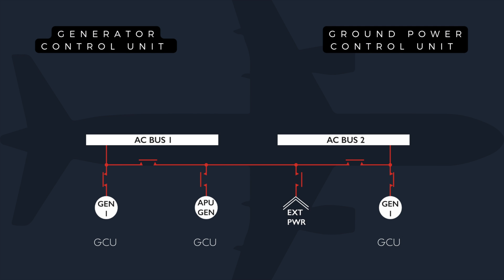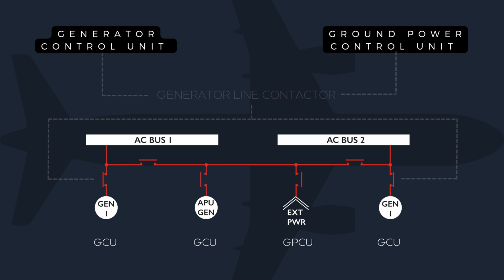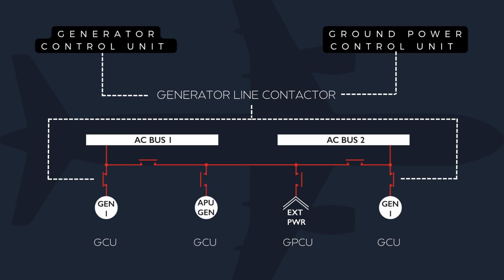The electrical generators are automatically controlled and monitored by generator control units, or GCUs, and external power is controlled by a ground power control unit, or GPCU. The GCUs and GPCU determine which power source takes priority by controlling the generator line contactors.